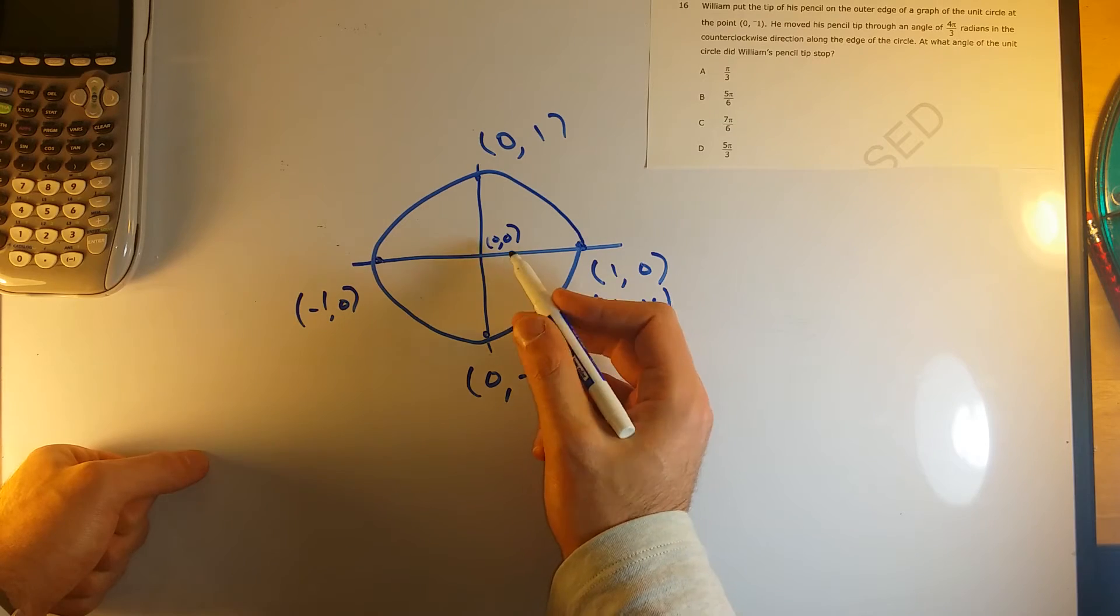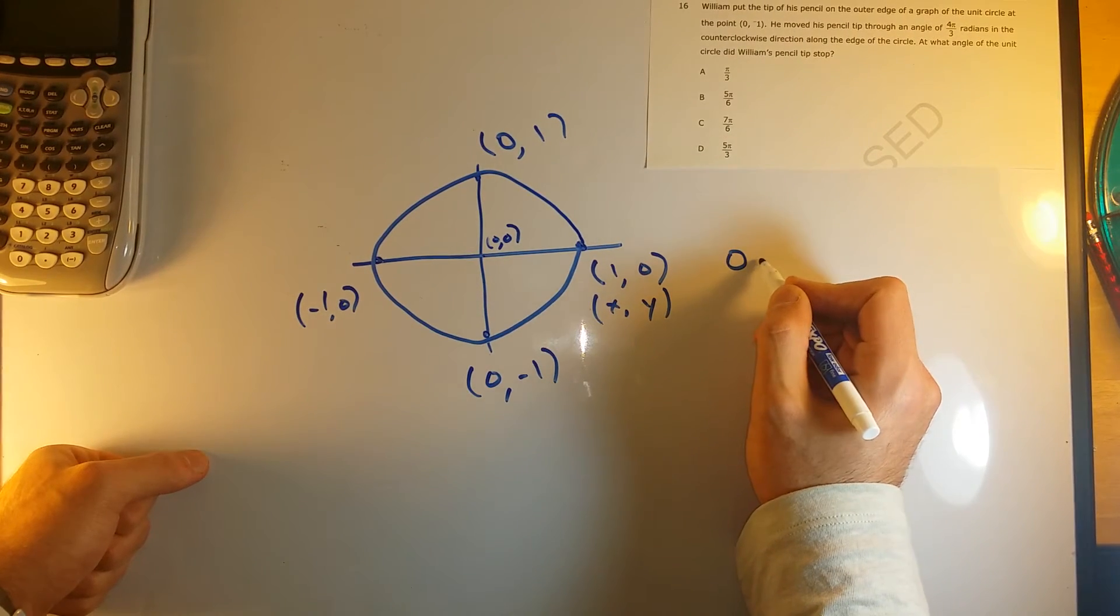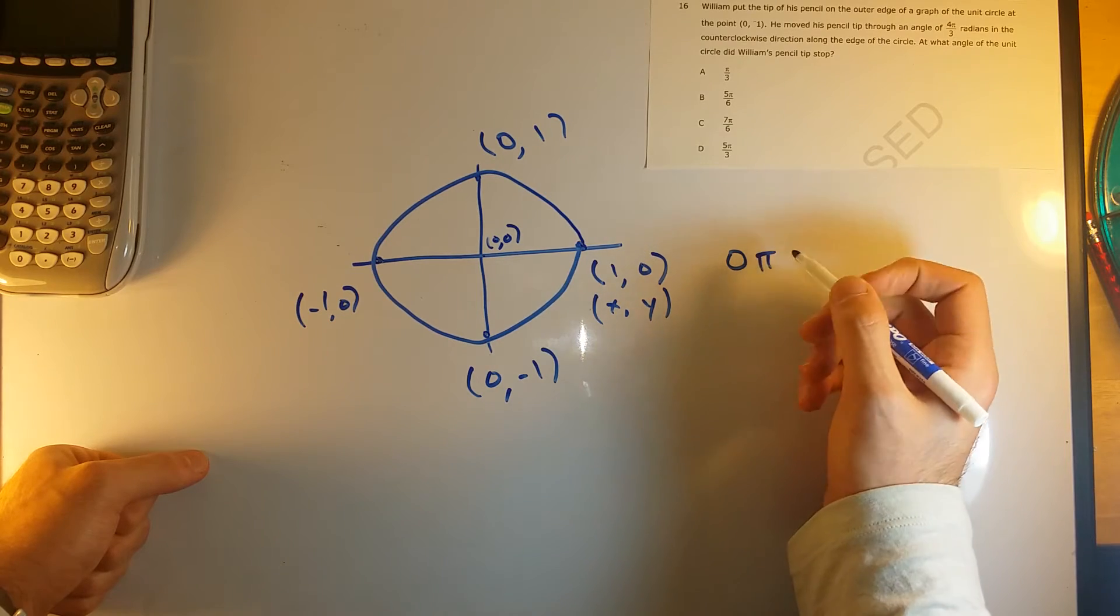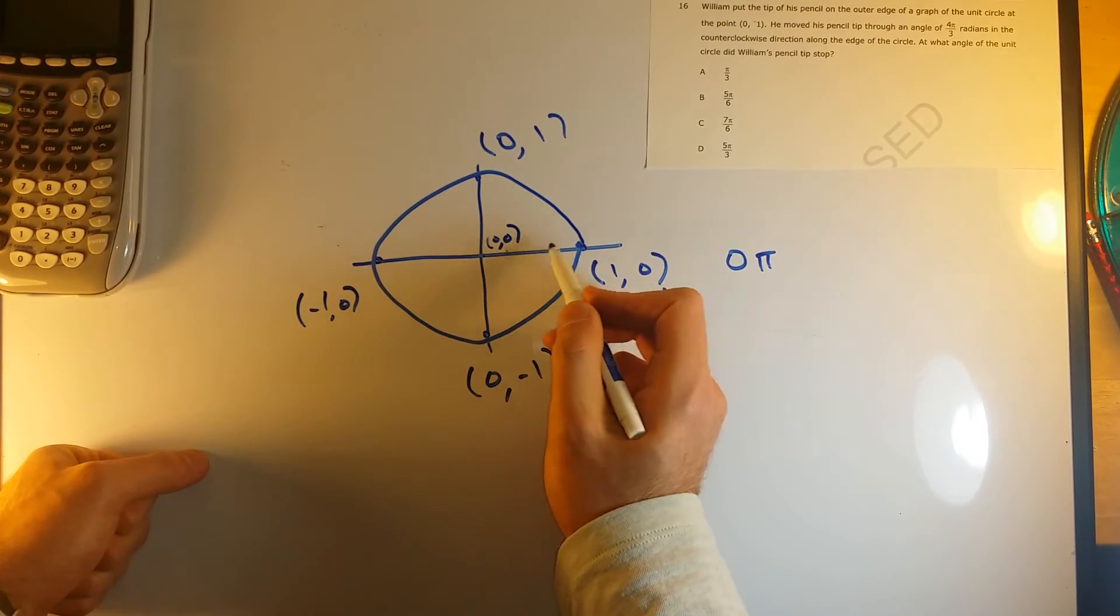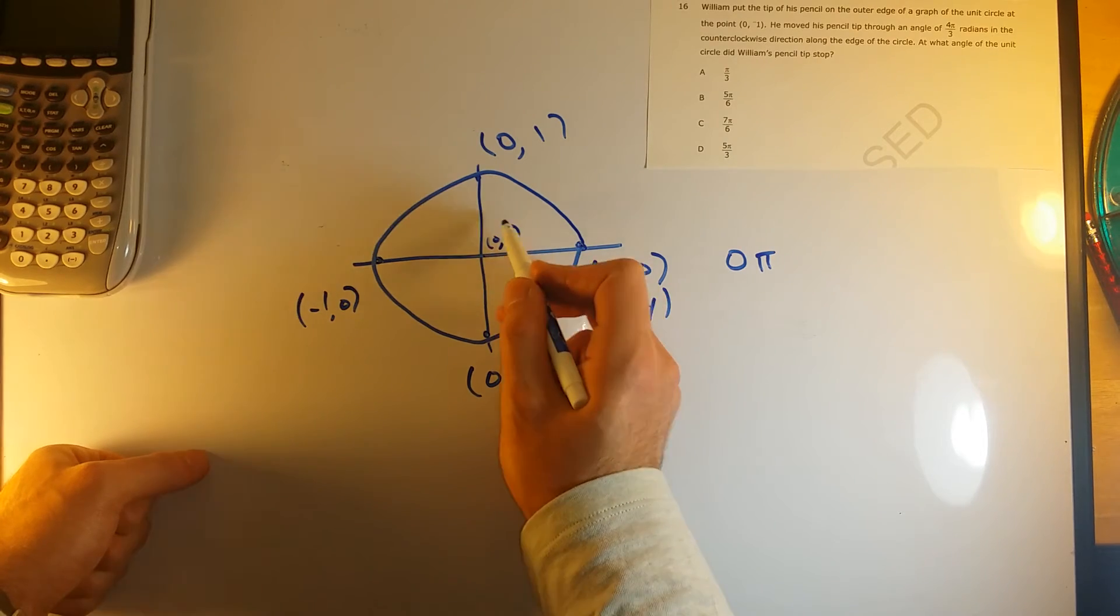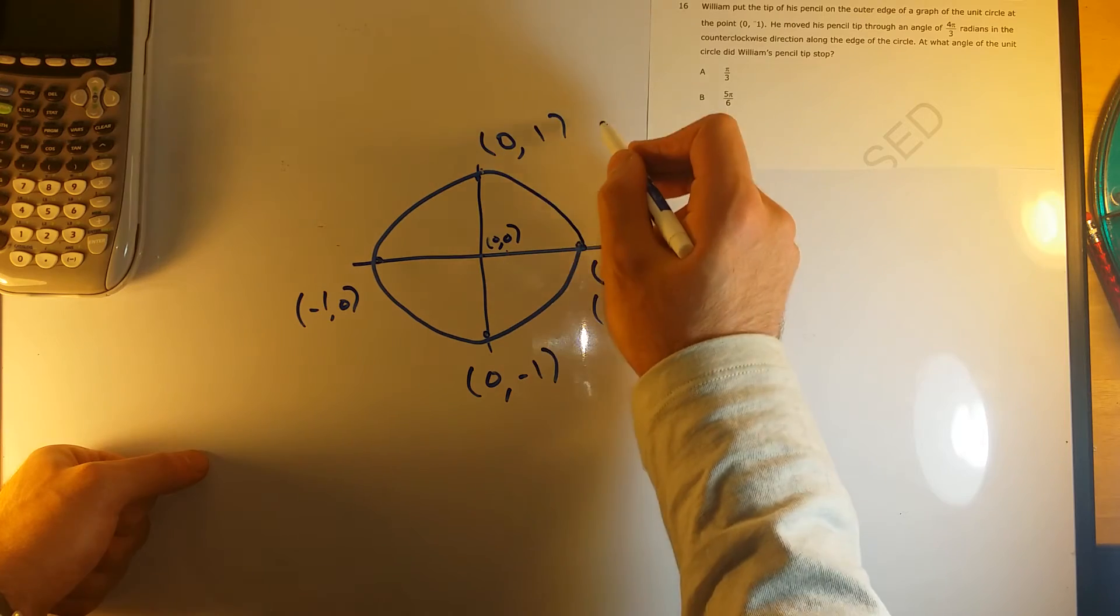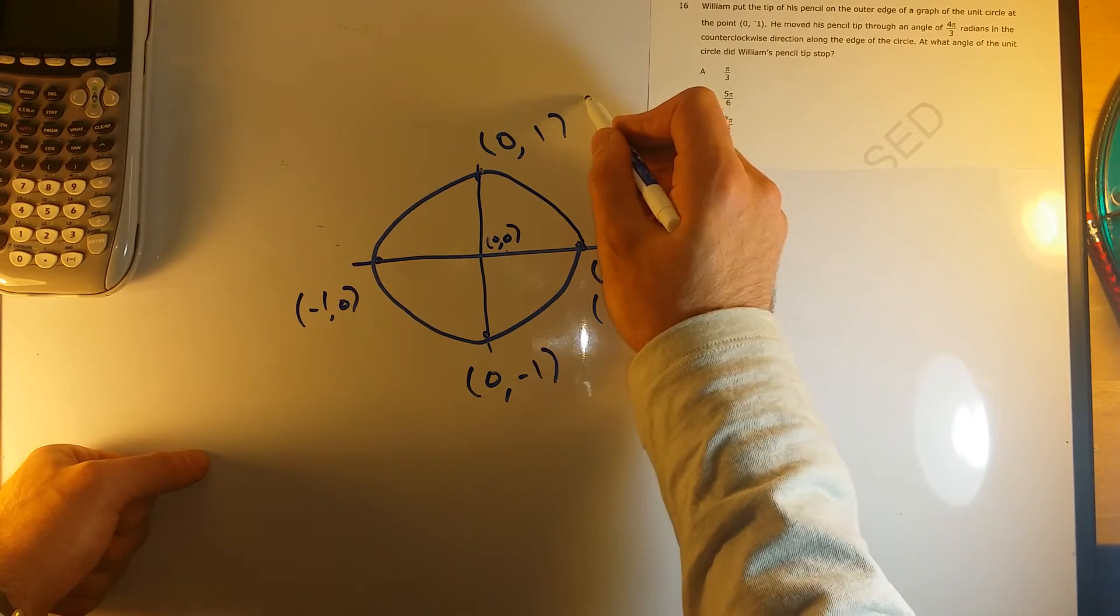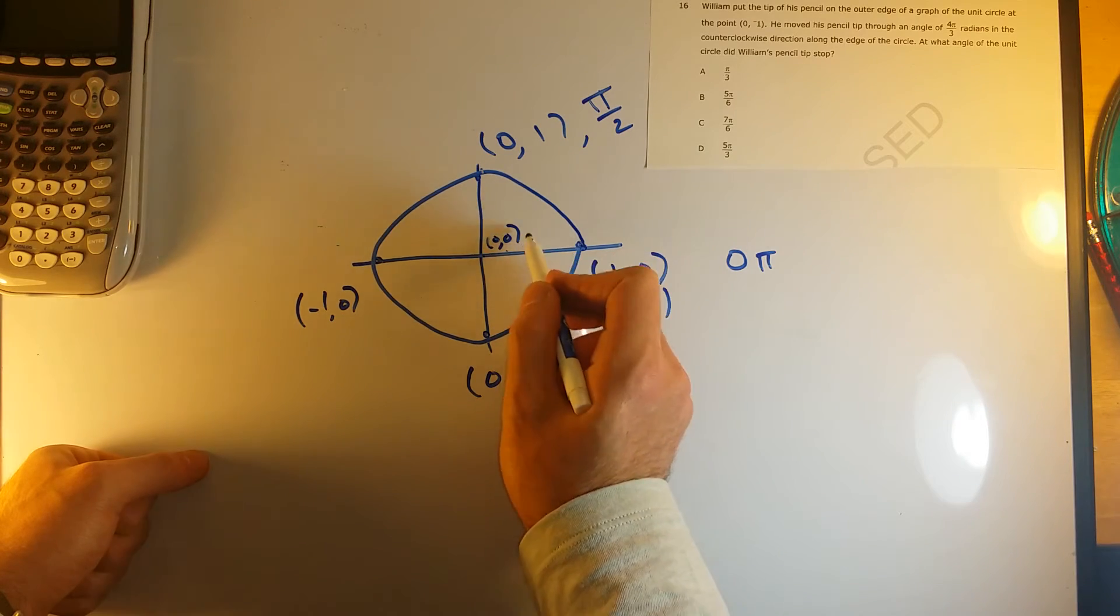And in terms of the angles that each of these are at, the starting point is at 0 radians, so 0π radians. If we have an angle up to this point right here, this would make a 90 degree angle or we say this is π over 2 radians, they mean the same thing. If we go halfway around the circle to this point, this would be 180 degrees or we just call this π radians.